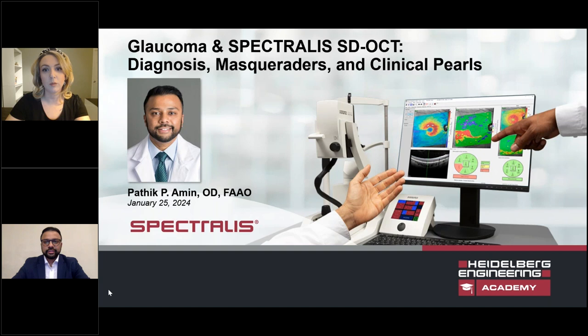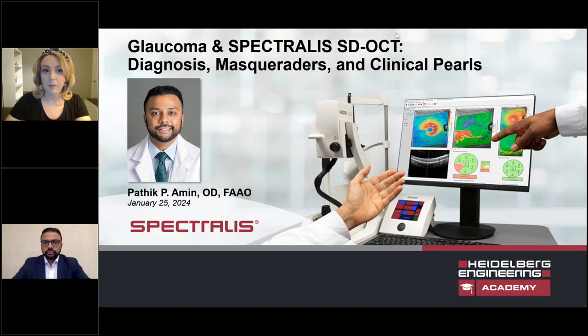Dr. Amin is an optometrist and an assistant professor in the Department of Ophthalmology and Visual Sciences at the University of Chicago, where he also serves as the Director of Optometry. He earned his optometric degree from the University of Houston and completed a residency in ocular disease at the Albuquerque VA Medical Center. Dr. Amin founded the first optometric residency program at the University of Chicago in 2021, for which he serves as Program Director.